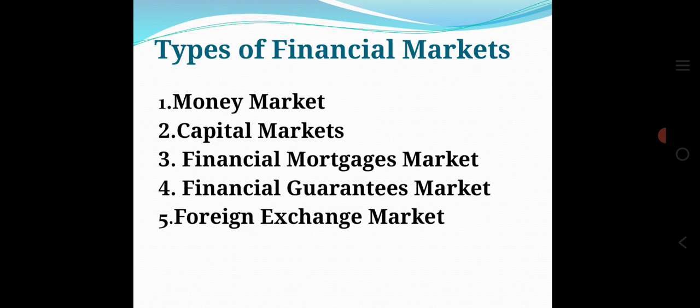Number four, financial guarantees market: The financial guarantees market is an independent market and a financial service market. It is the center where finance is provided against the guarantee of a reputed person in the financial circle. There are many types of guarantees: performance guarantee, financial guarantee, personal guarantee, government guarantee, and institutional guarantee.